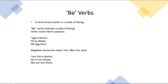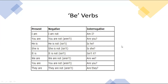Then we have B verbs. A verb shows action or a state of being; B verbs indicate a state of being. For example: 'I am a doctor,' 'he's sleepy,' 'we are here.' Is, am, and are are the B verbs — they show what is being. For negative sentences, just add 'not' after the B verb — for example, 'I am not a doctor.' You can make affirmative, negative, and interrogative sentences with B verbs as well.